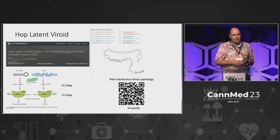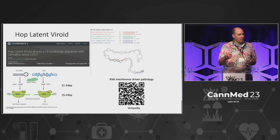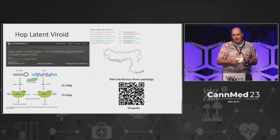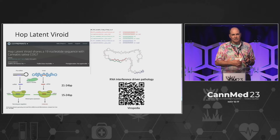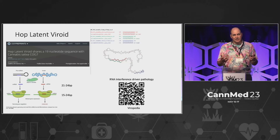This is a picture of hop latent viroid sequence through RNA fold up there on the upper right. It's not very large. It doesn't code for any proteins. It's just a piece of RNA. So what the heck is this doing in the plant to create such a tremendous downfall in yield?